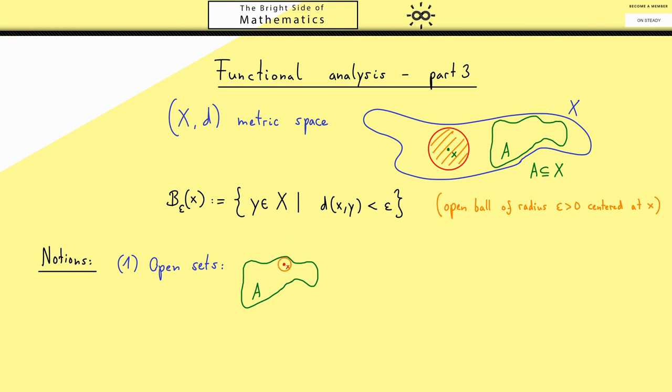Of course in order to describe this we can use such an epsilon ball. We just have to choose a positive epsilon but we can choose it as small as we need it. And if we can do that for each point separately then we have an open set A.